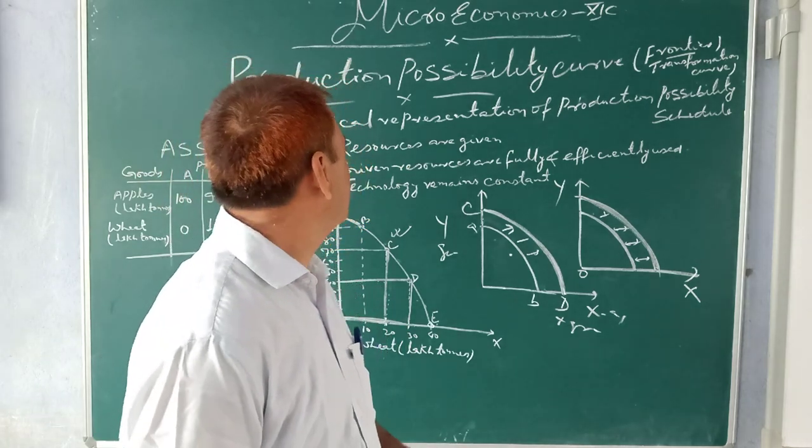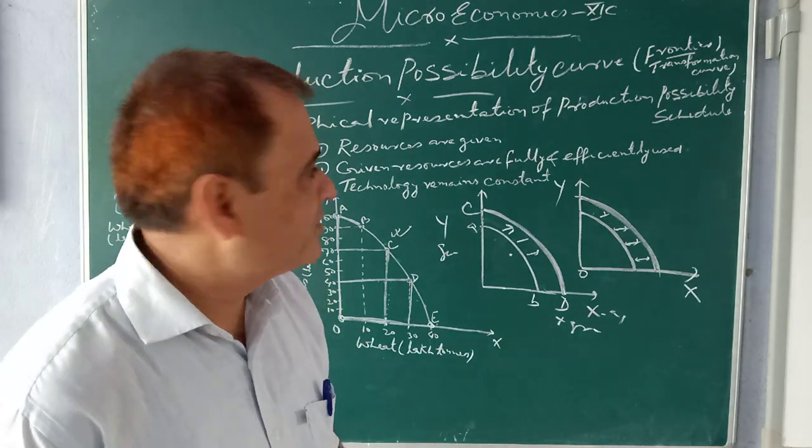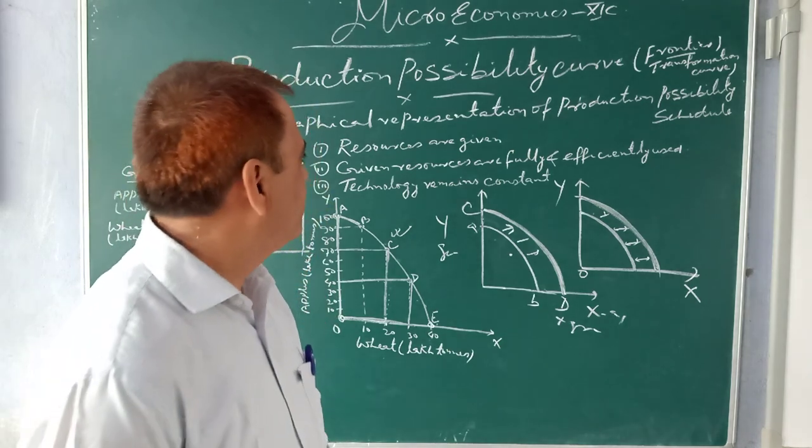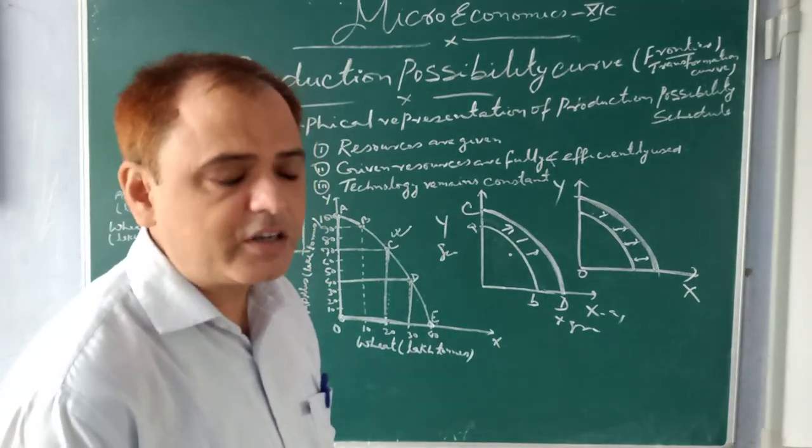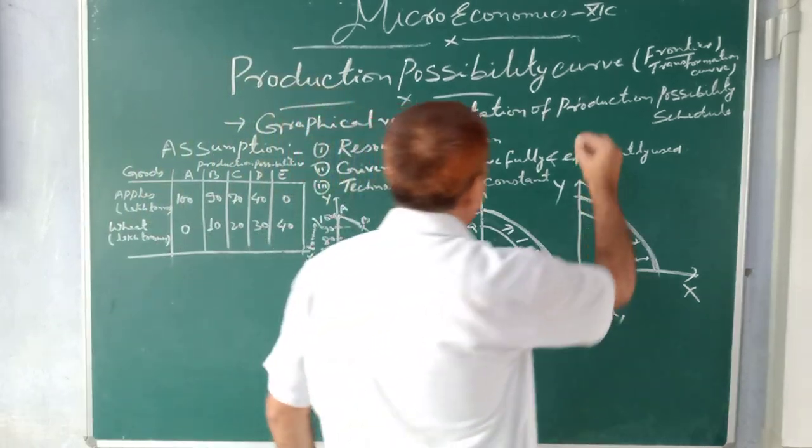Today the next topic is Production Possibility Curve, that is also known as Frontier Curve or Transformation Curve. Names are different but everything is same.